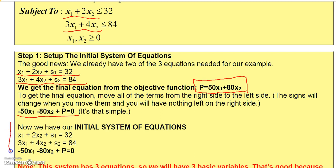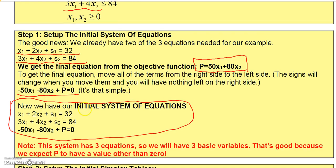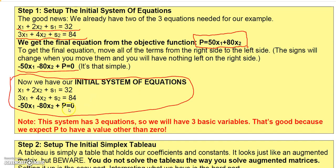If you take this equation and put it with the other two, that's what we call our initial system of equations. Notice there are three equations and five variables — x1, x2, S1, S2, and P. Since we have three equations, we're going to have three basic variables and therefore two non-basic variables.